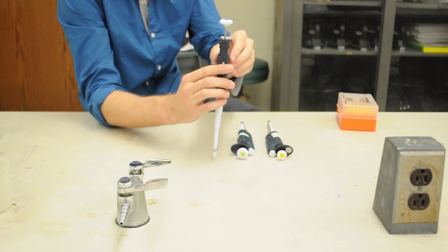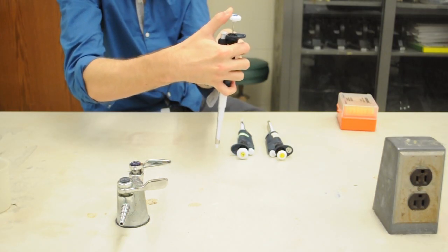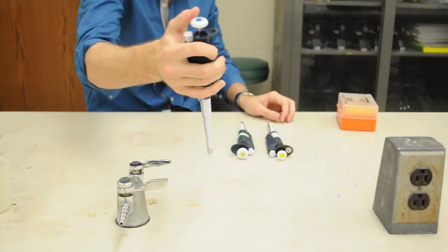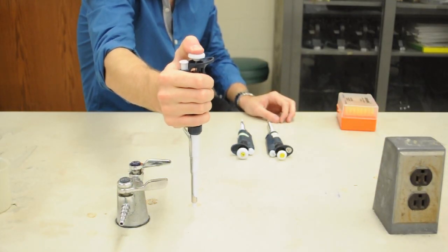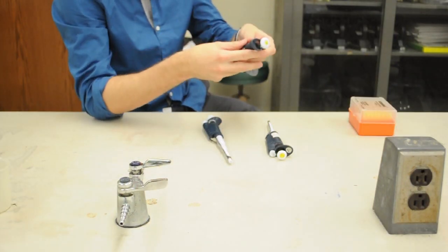Each micropipet has a plunger at the top that has two stops on it. The first stop is used to prime the micropipet to draw liquid. And the second stop is used to expel everything in the micropipet tip.